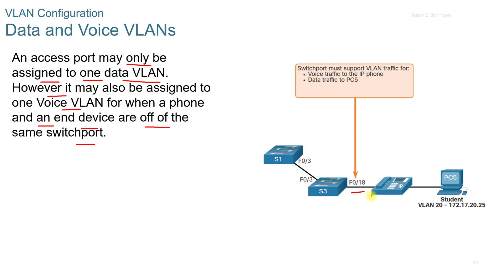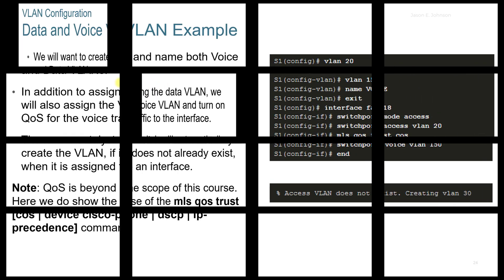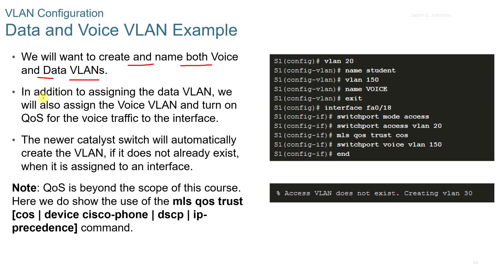You can connect to your phone and then go from your phone to your end device using only one connection — no need to run two lines. When creating and naming both voice and data VLANs, in addition to assigning the data VLAN, we also assign the voice VLAN and turn on QoS for voice traffic on the interface. The newer Catalyst switch will automatically create the VLAN if it does not already exist when assigned to an interface. We set VLAN 20 with its name, set VLAN 150 named voice, configure the interface, assign switchport access VLAN 20, set QoS with the MLS QoS trust command, set the switchport to voice, then use the end command.